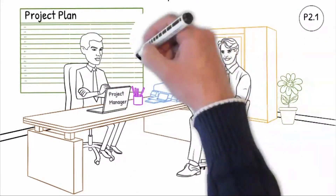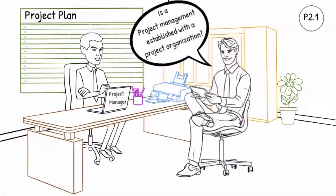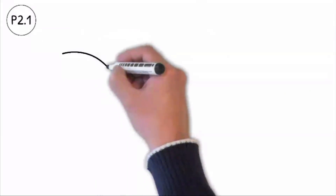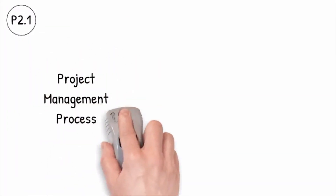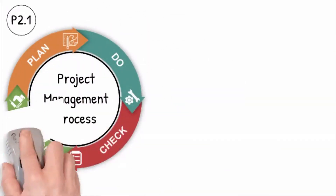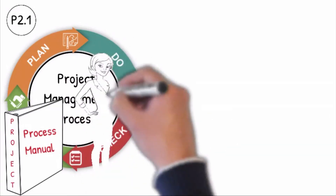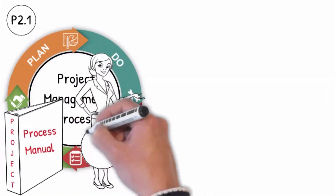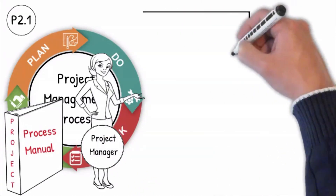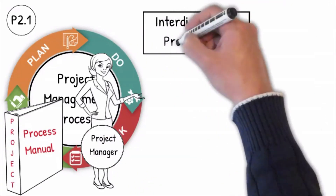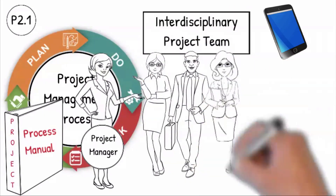Question P2.1: Is a project management established with a project organization? Our company's project management process is described in the project management manual that meets our customer-specific requirements. The roles, tasks, competence and responsibilities of the project leader are defined, and all the expertise required for implementation is established. We have an interdisciplinary project team from different departments and their contacts are known.